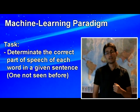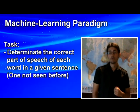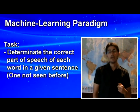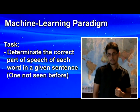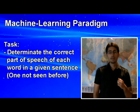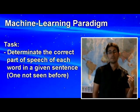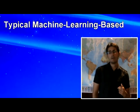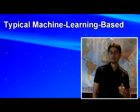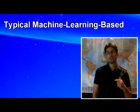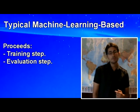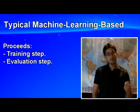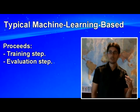As an example, consider the task of determining the correct part of speech for each word in a given sentence, typically one that has never been seen before. A typical machine learning-based implementation of a part-of-speech tagger is produced in two steps: a training step and an evaluation step.